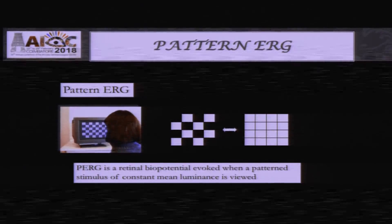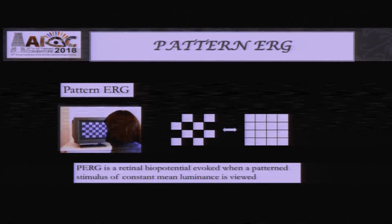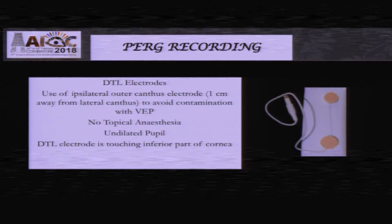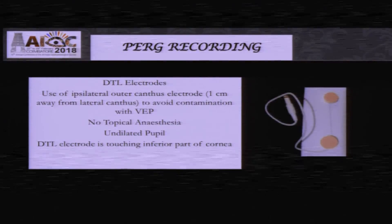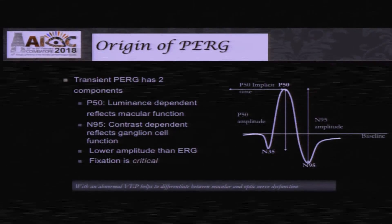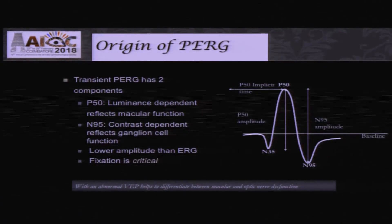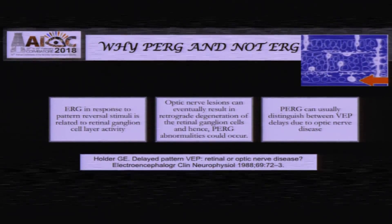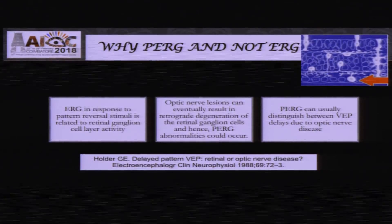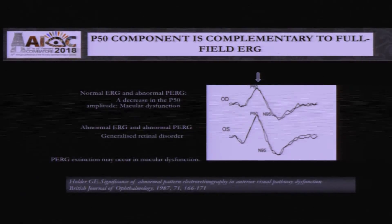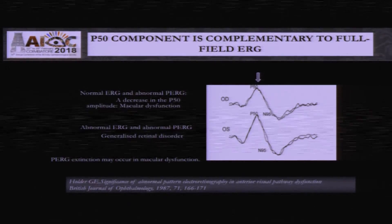The difference between pattern ERG and full-field ERG is that full-field ERG responds to a flashlight, while pattern ERG gives you a receptor biopotential when a pattern stimulus is given. Recording is done ideally with a DTL electrode because we don't use a contact electrode — the amplitudes of pattern ERG are very small, and a contact lens may attenuate the response. The important waveforms are N35, P50, and N95, where P50 is dependent on macular function and N95 is dependent on optic nerve function.